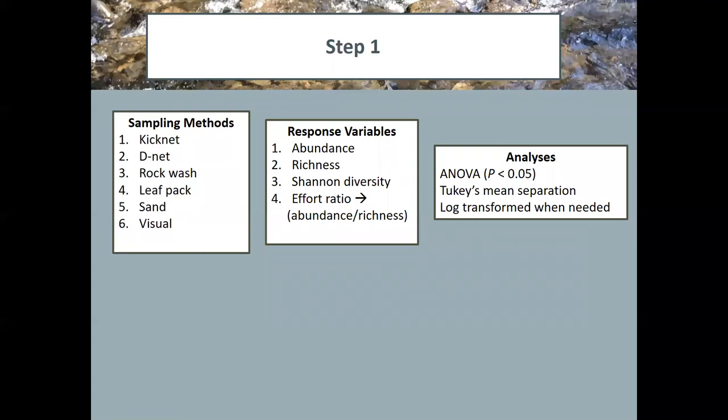And data were analyzed by ANOVA with Tukey's mean separation and when needed log transformed. So a method that would give us would be one that we would want to keep in. Look for lower abundance and consequently lower effort ratio. So not having to go through a lot of material to get the data. And then higher richness and higher Shannon diversity. So keep that in mind as we walk through the next slides.